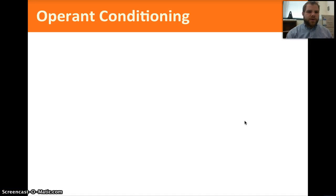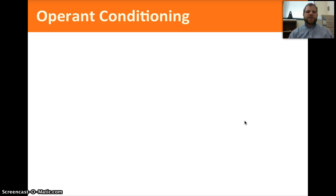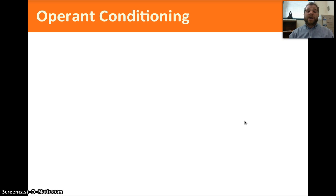Hi guys. Tonight we're going to stick with our topic of conditioning, and now we're going to talk about operant conditioning. Last night we talked about classical conditioning, which really works on our sort of involuntary actions, like the dog's response to food — it wasn't a conscious action. Tonight, when we talk about operant conditioning, we're talking about conscious behavior, voluntary actions — we're changing our behavior over time.